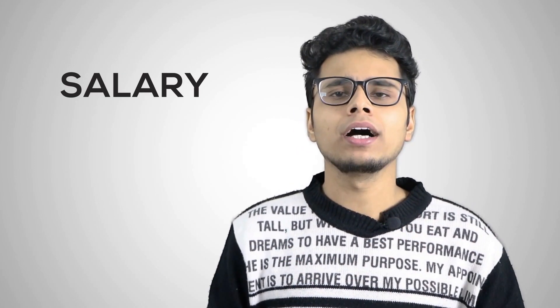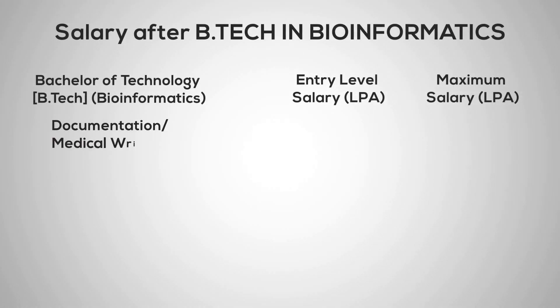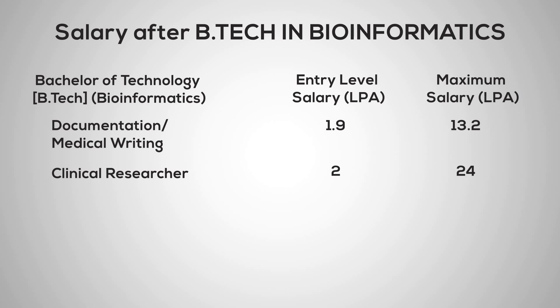Now here is a very important point — salary. If you are in documentation or medical writing, the minimum salary you can get is approximately 1.9 lakh per annum and the maximum is approximately 13.2 lakh per annum. If you are a clinical researcher, the minimum approximate salary is 2 lakh per annum and it can go up to 24 lakh per annum. If you are a lab technician, the minimum is 1.2 lakh per annum and it can go up to 10.8 lakh per annum.